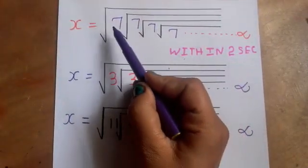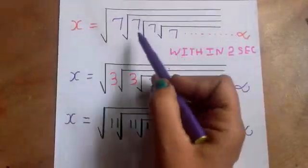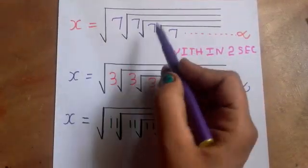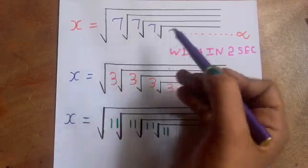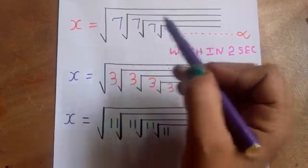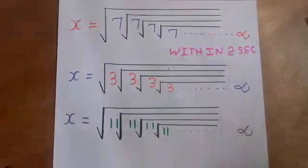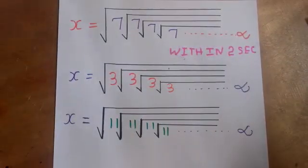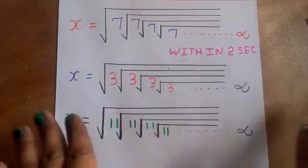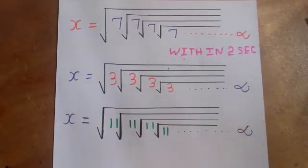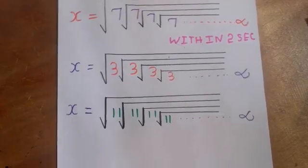x equal to root 7. That is one root 7. This is a TNPAC exam completed exam, you will see this model sum.